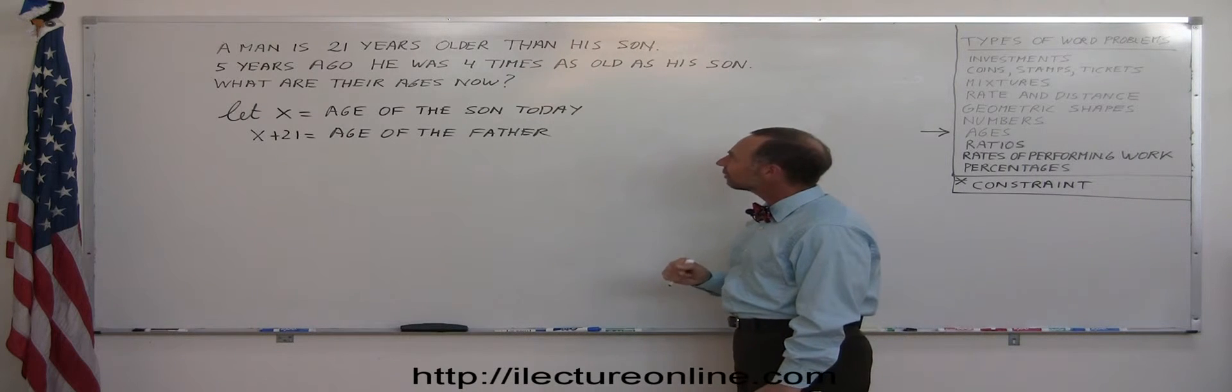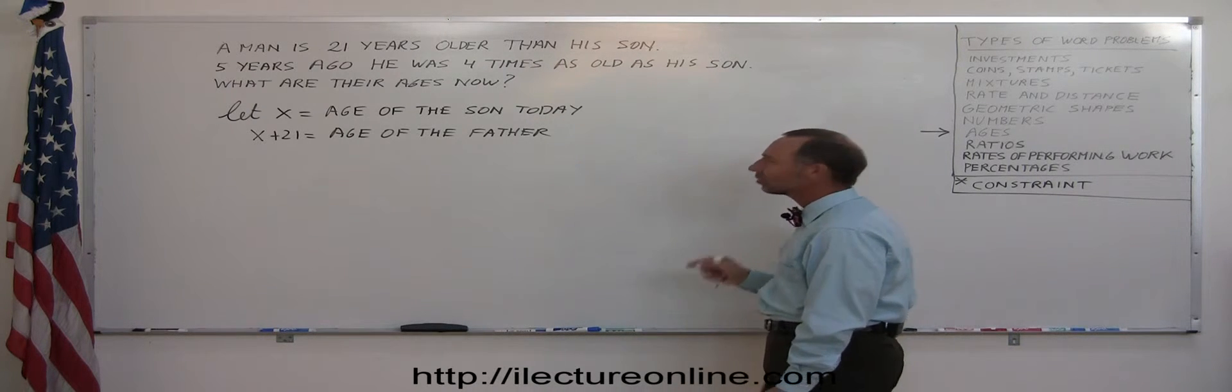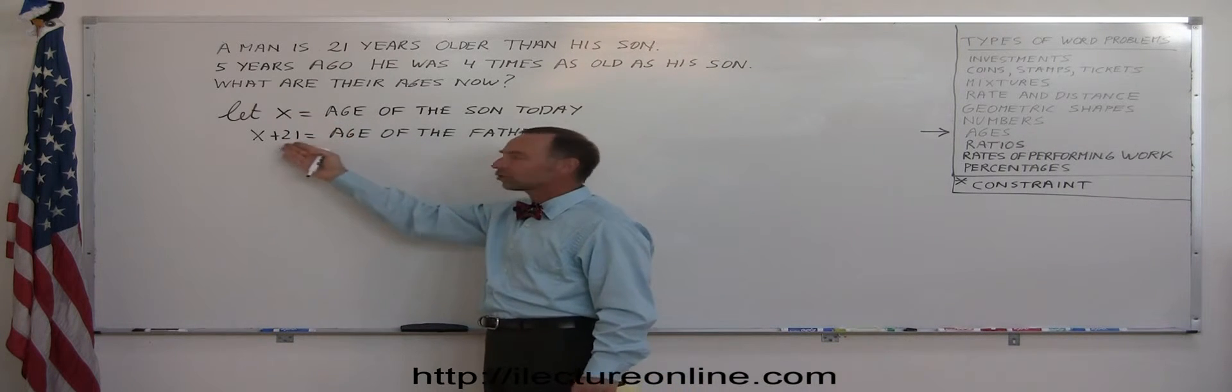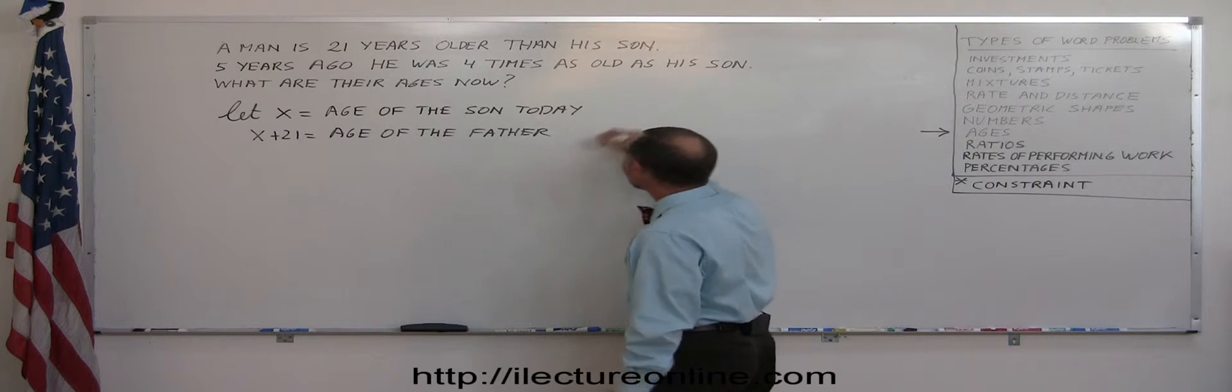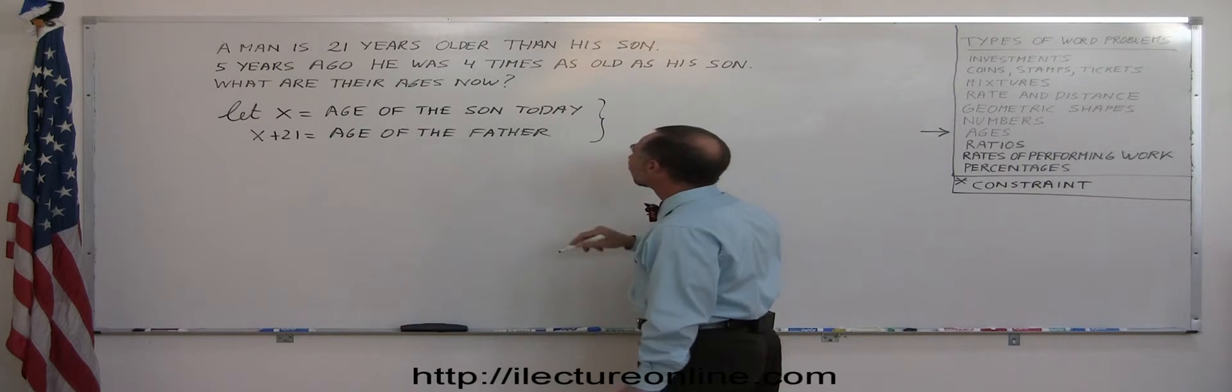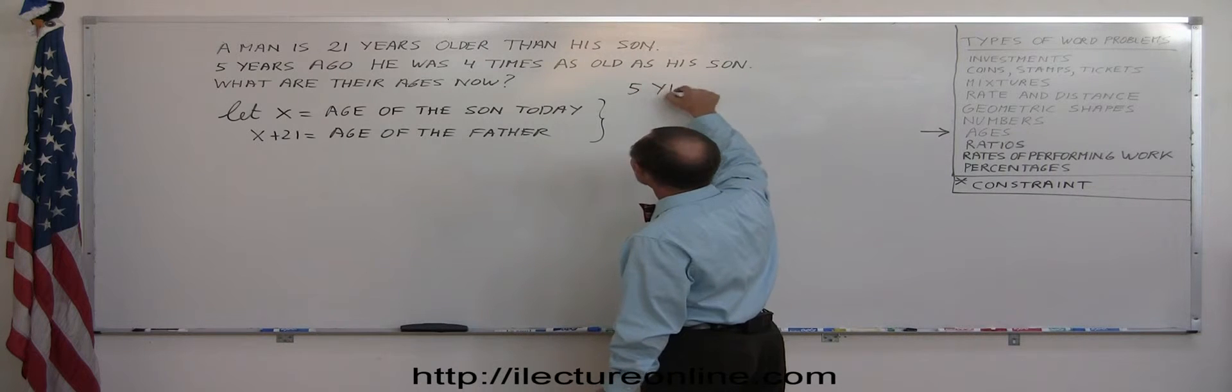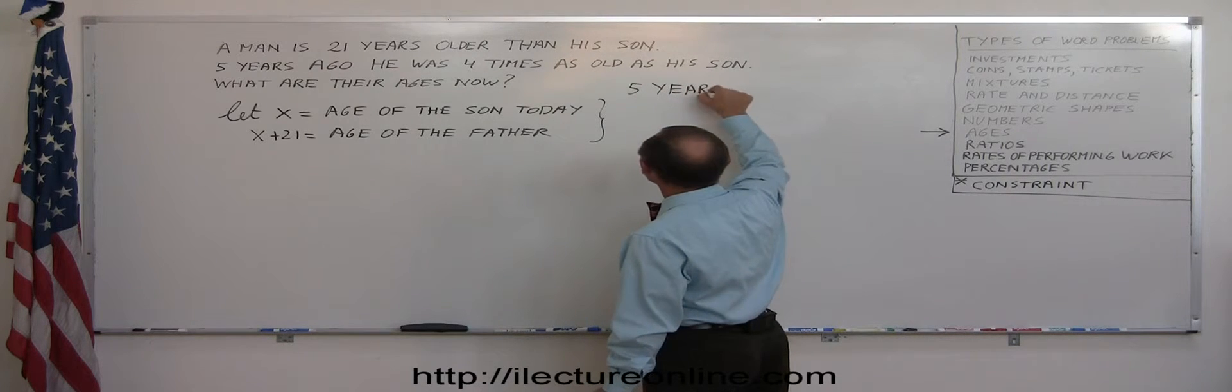And here it says that five years ago, he was four times as old as his son. Five years ago. So we can't use the definition of what the ages are today. We need to transform that into the ages five years ago. So five years ago, how would we express their ages?